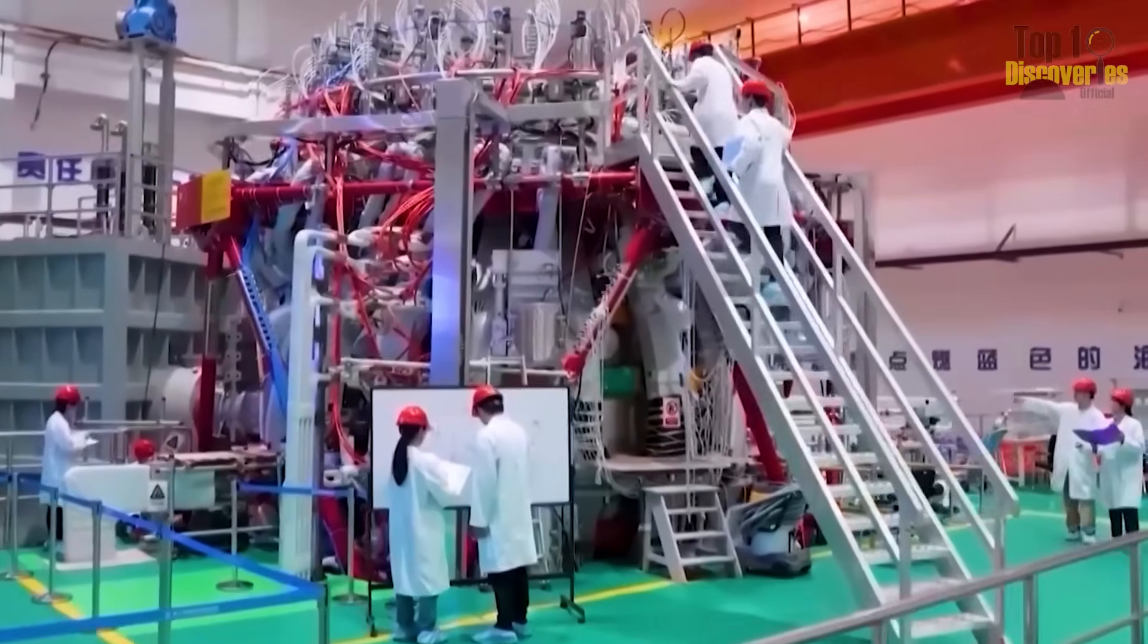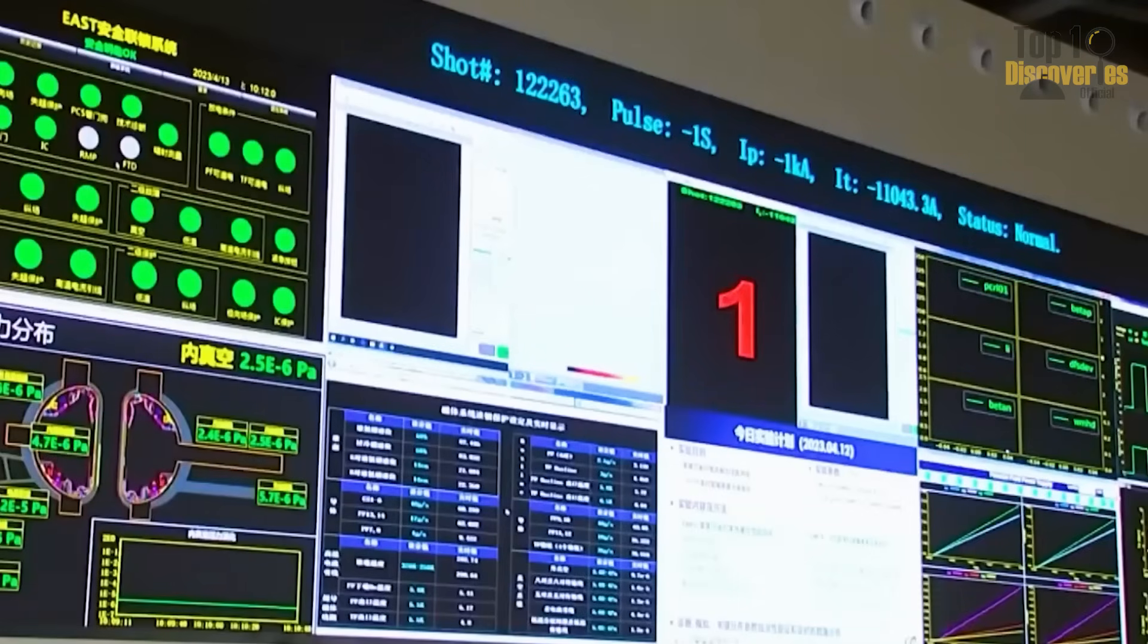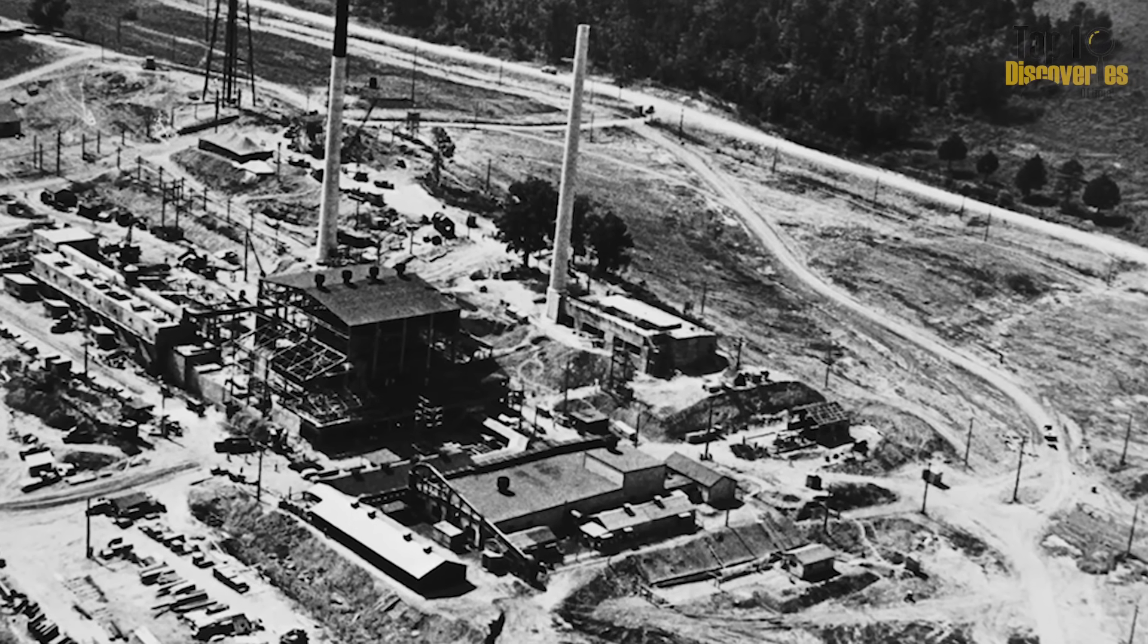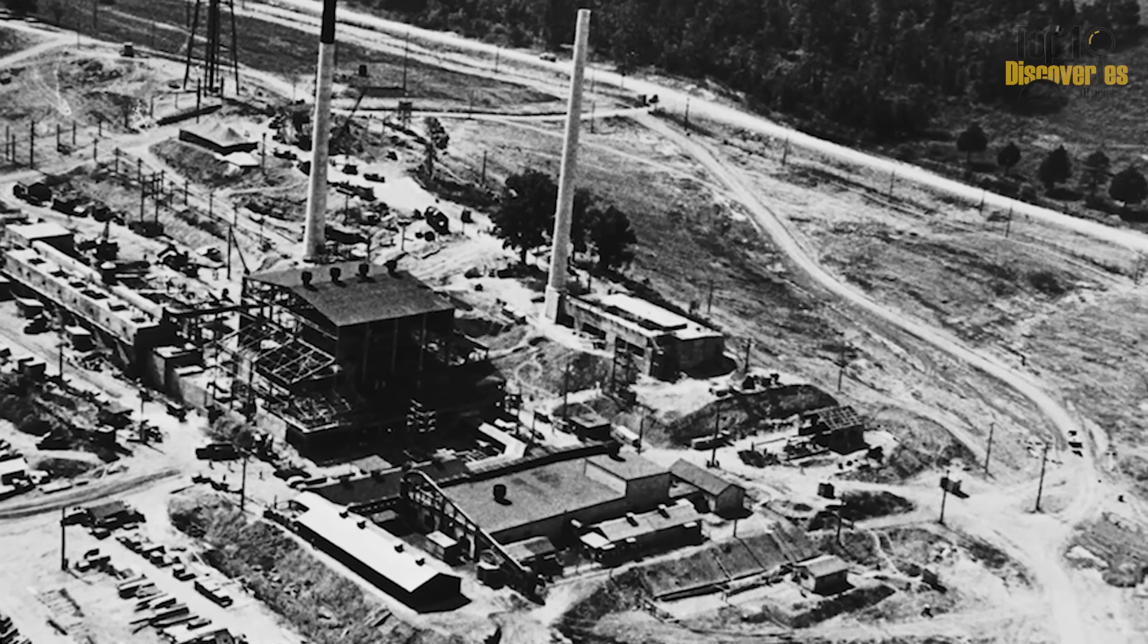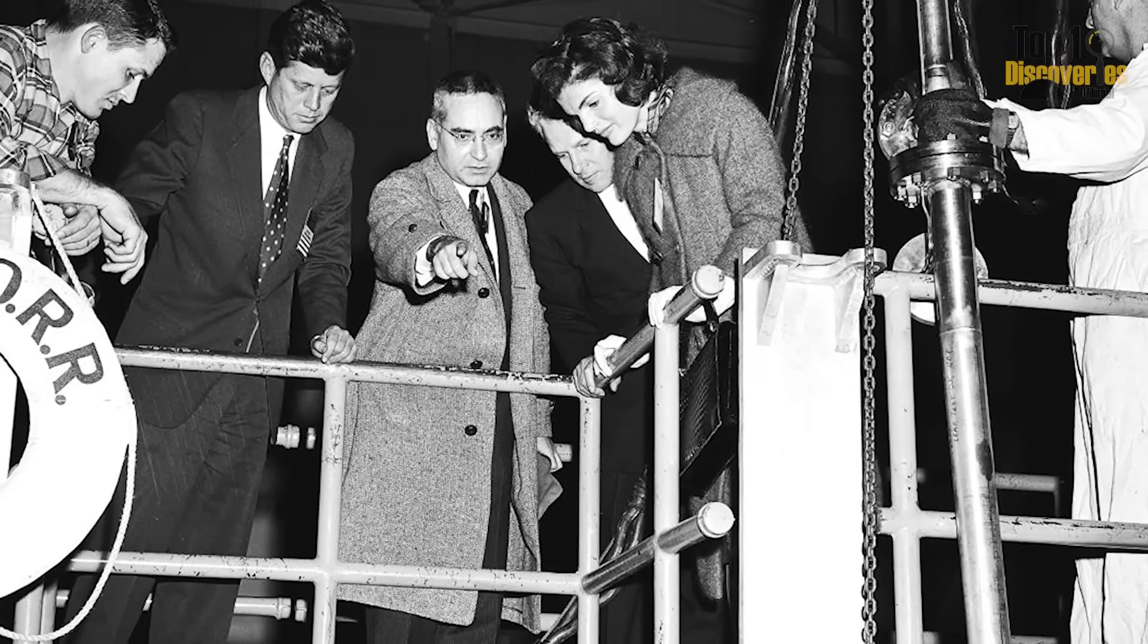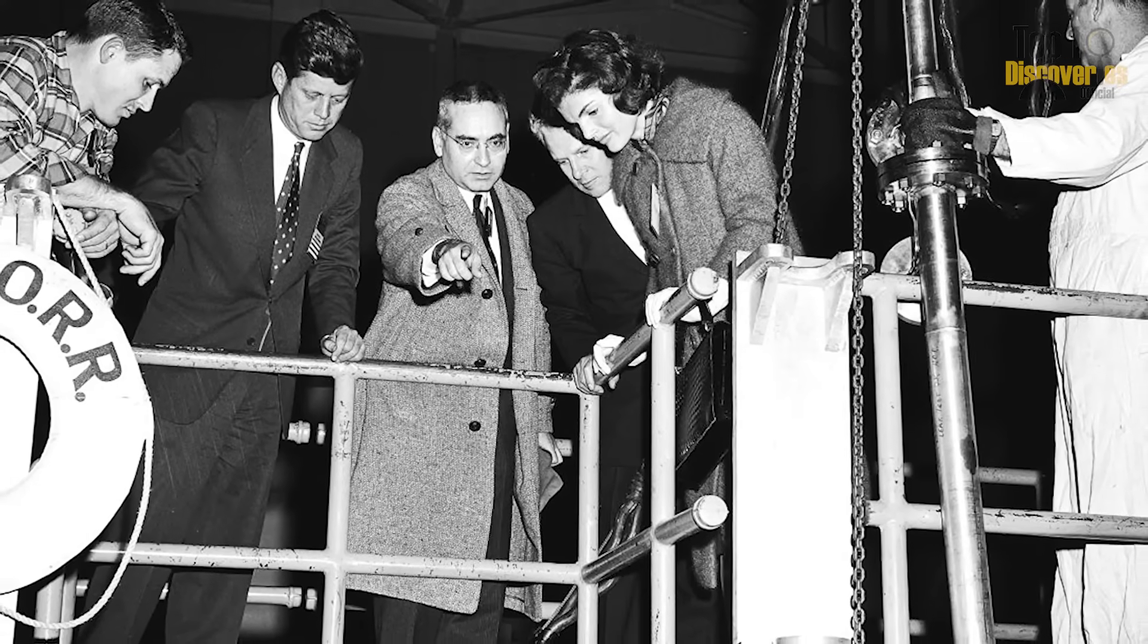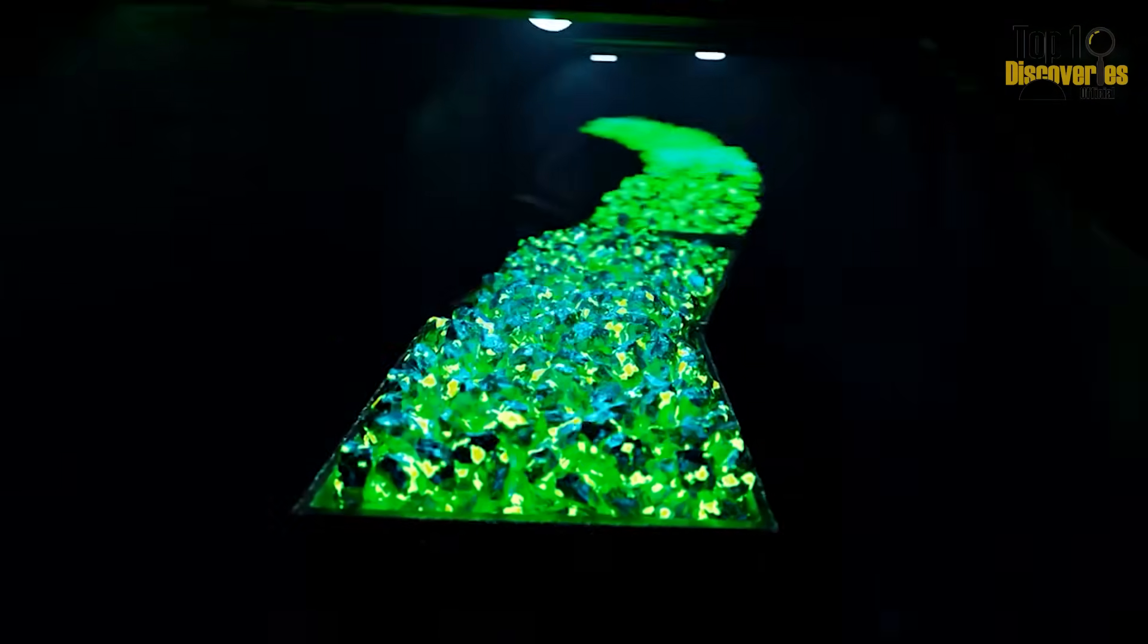China's thorium revolution did not emerge from nowhere. In the 1960s, the U.S. Oak Ridge National Laboratory laid the groundwork with the Molten Salt Reactor Experiment, successfully operating a test reactor from 1965 to 1969 at a cost equivalent to $1 billion today. This project demonstrated that MSRs could operate safely, efficiently, and reliably, but the U.S. abandoned it to focus on uranium, which was better suited for nuclear weapons production.